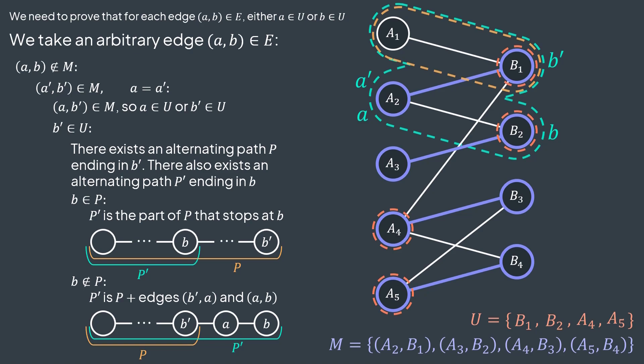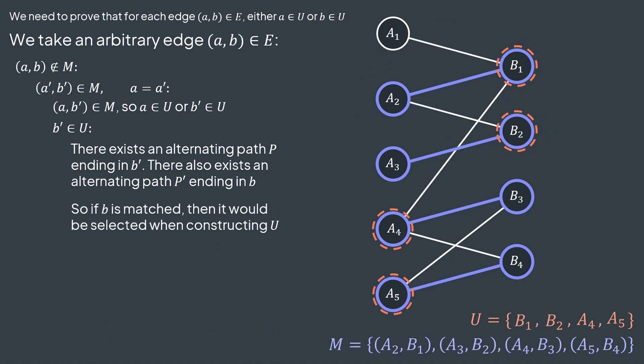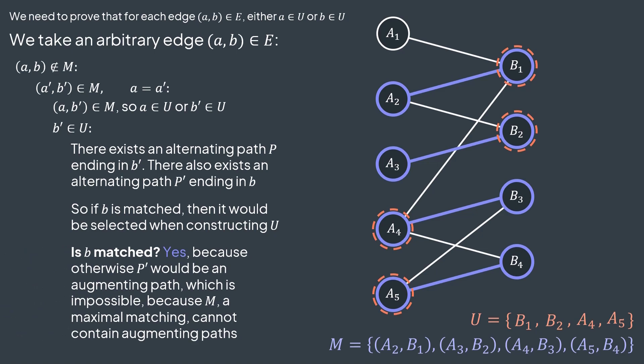In this example, b' is b1, we have an alternating path to it, and by adding edges (b', a) and (a, b) we get an alternating path to b. In both cases, we have an alternating path that ends in b. It means that if b is matched — is incident to an edge in the matching — then it will be selected to be inserted in the set U. However, are we sure that b is matched? If b was not matched, then P' would be an augmenting path, which means we can flip membership of its edges to get a bigger matching. But M is maximal, it cannot contain an augmenting path. Hence P' is not an augmenting path, so b is matched. And because b is matched and there exists an alternating path that ends in it, b will be added to U.